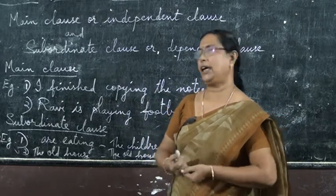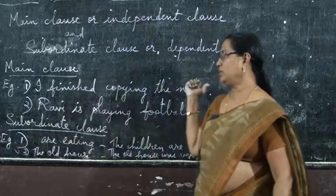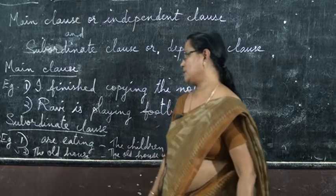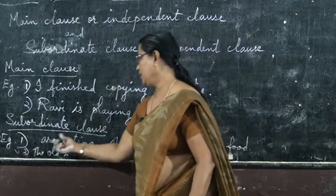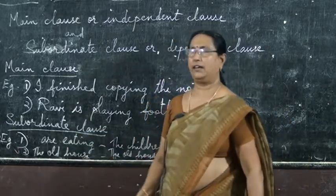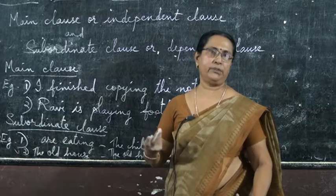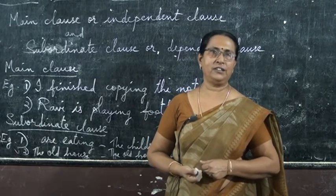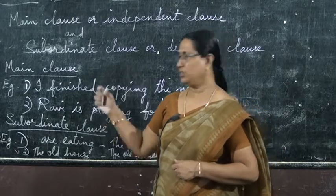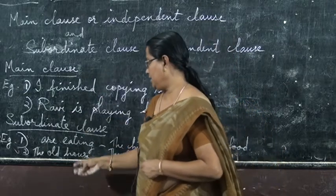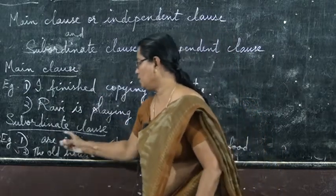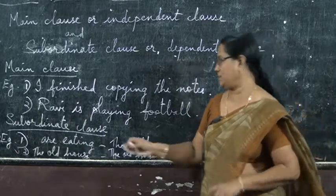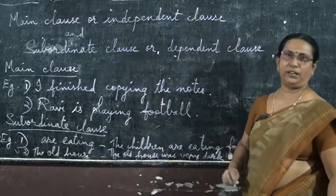A main clause does not need any help from another sentence. But look at the example of the subordinate clause. Only half is given: 'are eating.' What does that mean? Who is eating? What are they eating? We do not know. So 'are eating' must depend upon some other words or sentence to get the complete meaning.